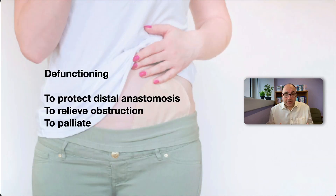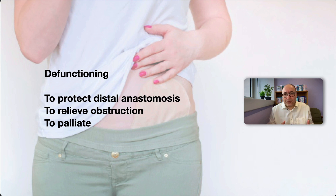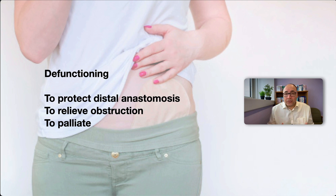Why would you use a defunctioning stoma? The most common reason is to allow something further downstream to heal. For example, if you've removed the sigmoid colon and anastomosed the two ends, you don't want fecal matter — which is full of bacteria — passing that anastomosis constantly, because there's a risk of infection, dehiscence, and sepsis. Another common use is to relieve obstruction further downstream, such as with a very large inoperable tumor. It can also be used for palliative reasons.